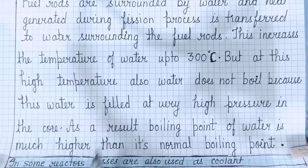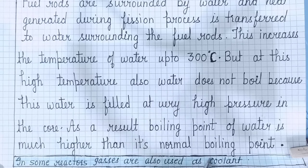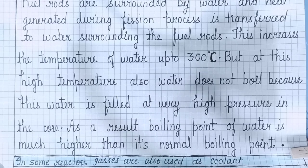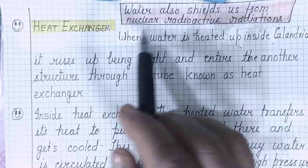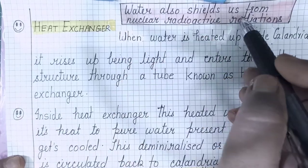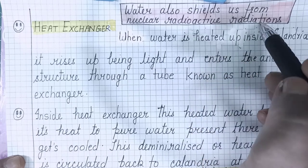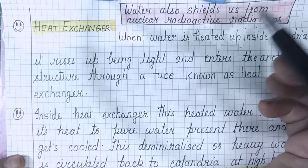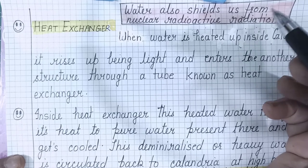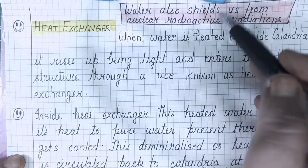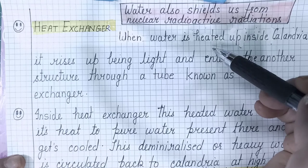In some reactors, gases are also used as coolant — so if an exam question lists a gas as an option, that can also be correct. Another advantage of using water as coolant is that water also shields us from nuclear radioactive radiation, as it is a very good absorber of radioactive radiation. So water has three advantages: it acts as a moderator, it cools the nuclear reactor, and it shields us from radioactive radiation.